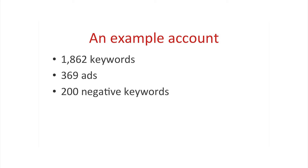Here's an example of an actual AdWords account we're running right now — we're using 1,862 keywords with this doctor, and from those keywords, 369 ads have been put together that get shown on the internet depending on what's being searched. Another technical point is negative keywords — words where when they're put in, you don't want your ad to come up. For example, if you have a dental spa and someone just types 'spa,' you wouldn't want your ad to appear because they're not even looking for a dentist. Plugging in negative keywords saves you money and prevents people from randomly clicking who don't have the intention of getting your service.